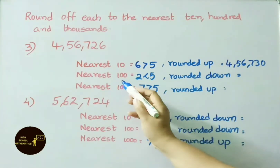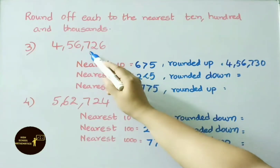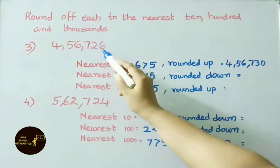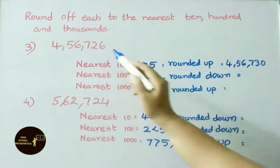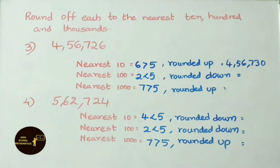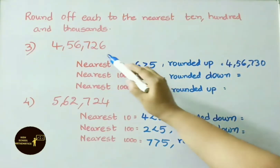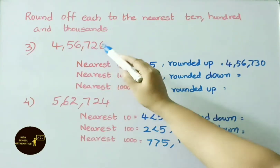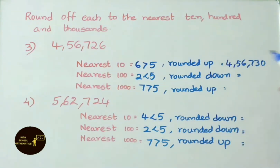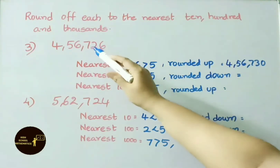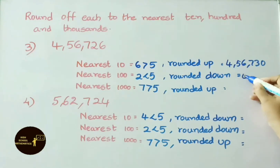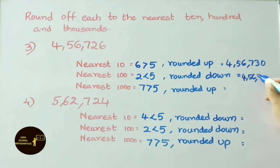Nearest 100 for 4,56,726: the digit to the right of the 100s place is 2. Since 2 is less than 5, we round down — make 26 into 00, and 7 remains the same. So the answer is 4,56,700.